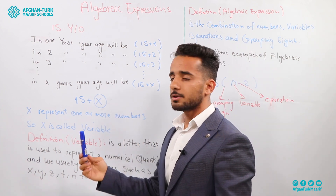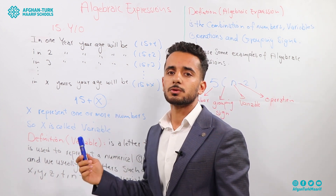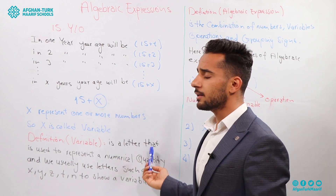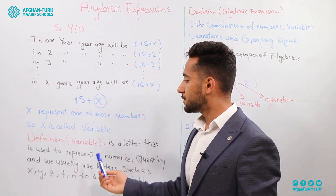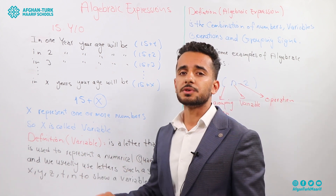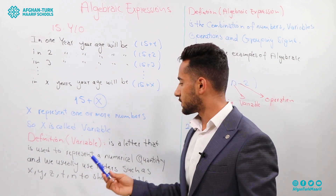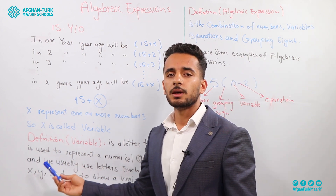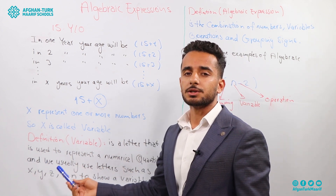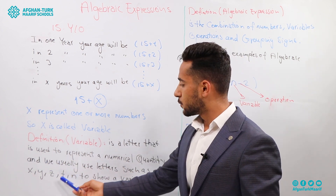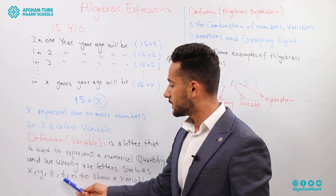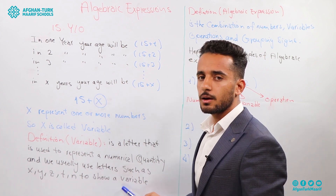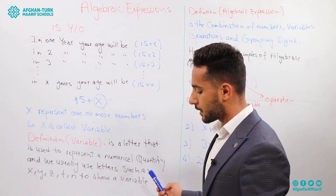Let's have a definition for variables. A variable is a letter which is used to represent a numerical quantity. We often use letters like X, Y, Z, T, and N to show a variable.